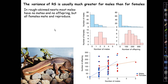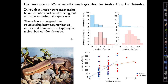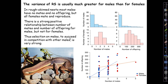Here's some data for rough-skinned newts. In this species at least, most males end up having no mates in a given year and produce no offspring, but all females mate and do reproduce. There's a strong positive relationship between number of mates and number of offspring for males, but not for females. So the selection on males to succeed in competition with other males is very strong. The blue graphs above are for males — many have no offspring, no mates. That's not true for females below: none of them had no mates, and all of them produced offspring.